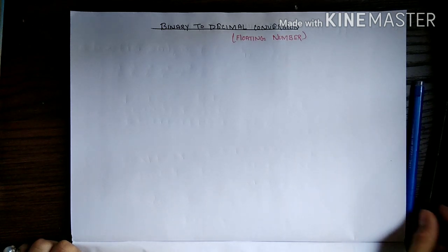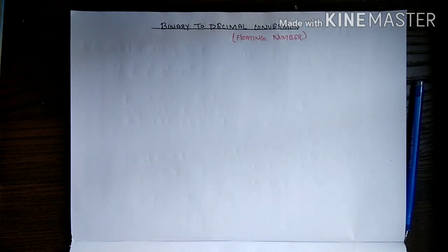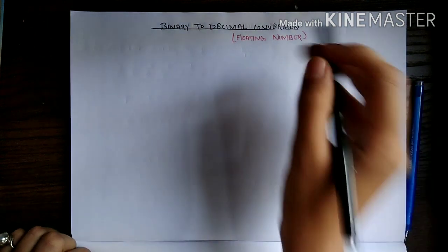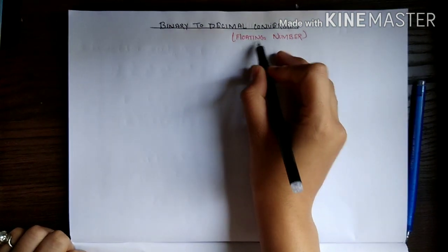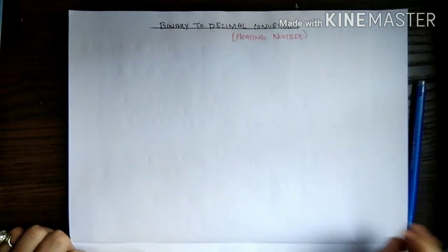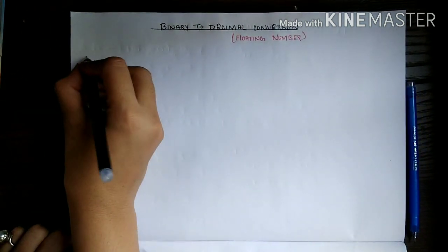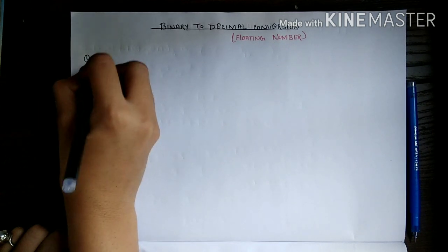Hello everyone, today we are going to see binary to decimal conversion of a floating point number. So let's take any example.